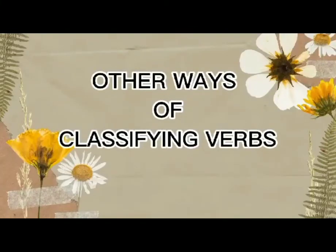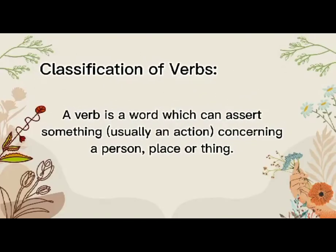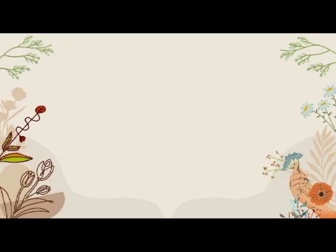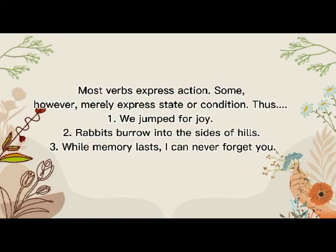Other ways of classifying verbs. A verb is a word which can assert something, usually an action, concerning a person, place, or thing. A verb describes an action or condition. Most verbs express action; some, however, merely express state or condition. For example: 'We jump for a choice' — the verb is 'jump' because it states an action.